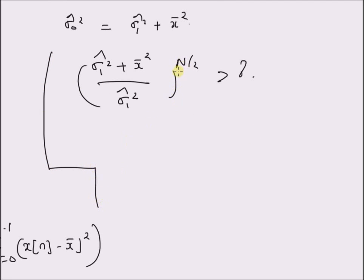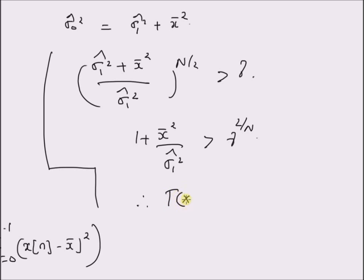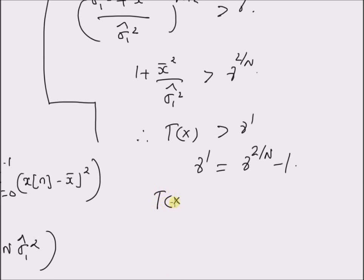By taking the exponent N/2 to the other side, we have (1 + x̄² / sigma-one-squared-hat) > gamma^(2/N). Therefore, the generalized likelihood ratio test simplifies to: T(x) > gamma', where gamma' = gamma^(2/N) − 1, and the test statistic T(x) = x̄² / sigma-one-squared-hat.